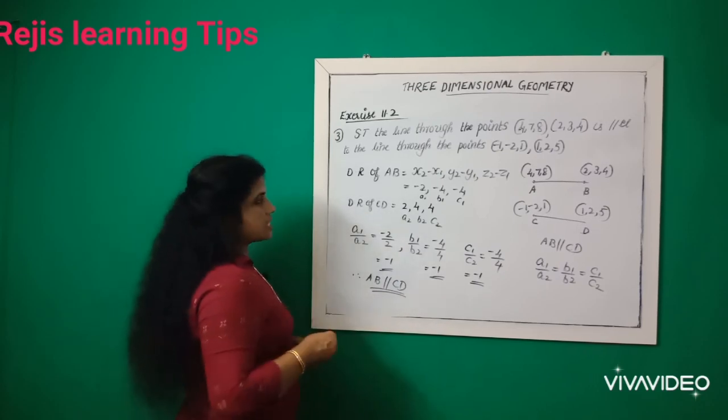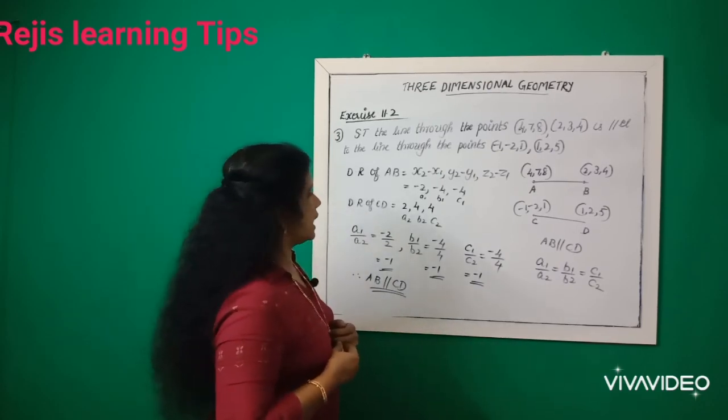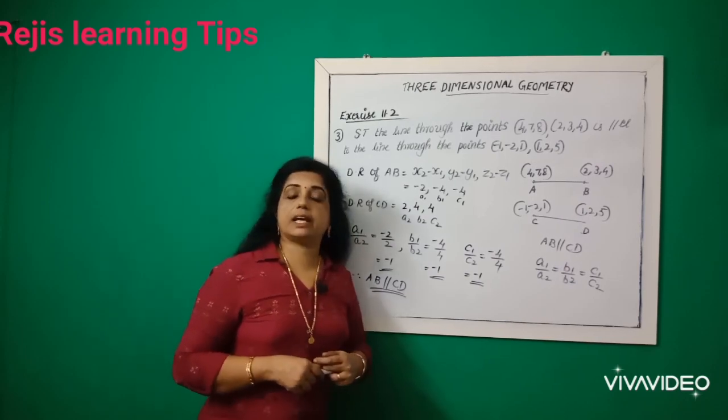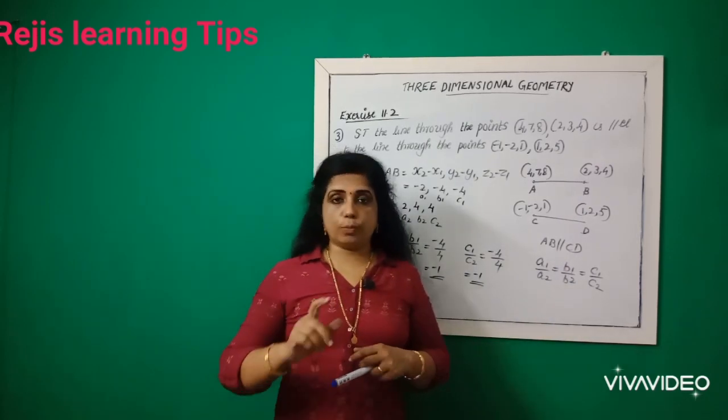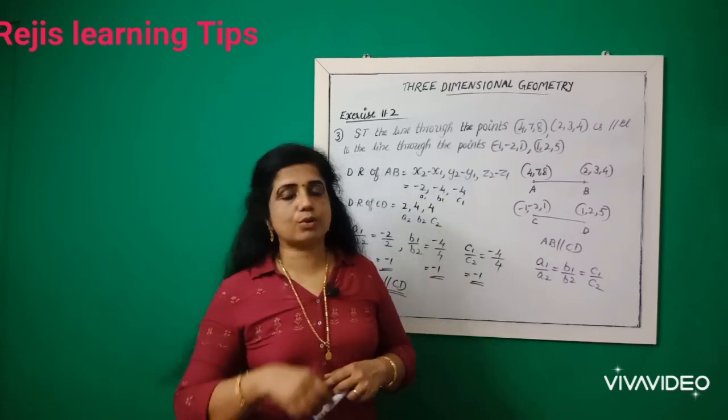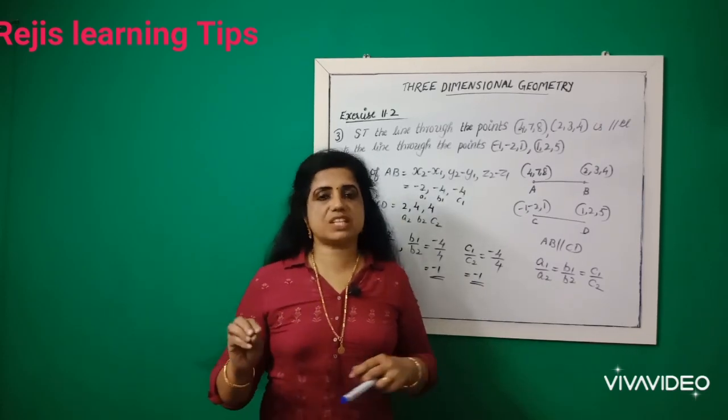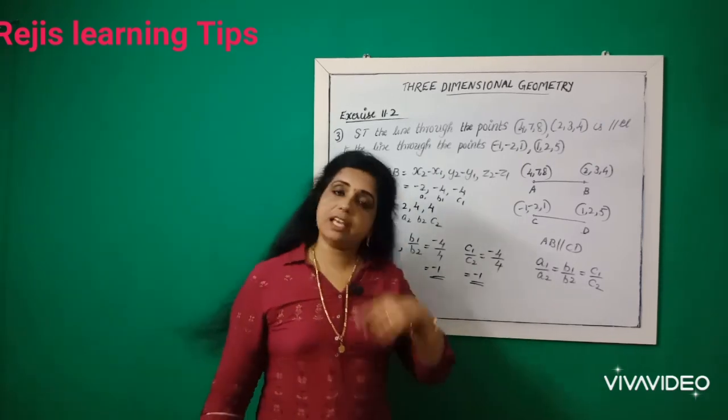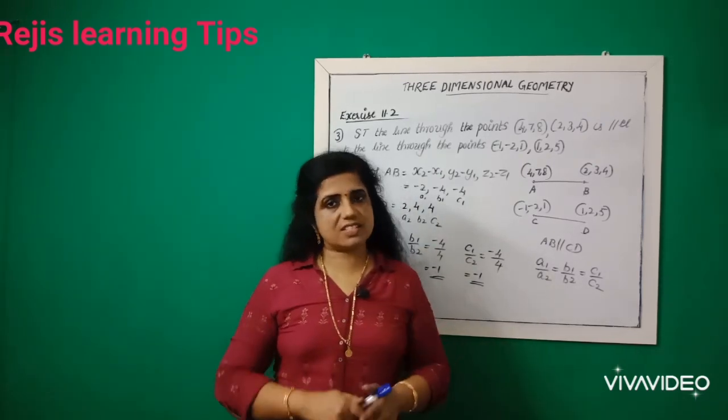Am I correct? The directional ratios prove that AB and CD are parallel, and we needed to prove that a1/a2 = b1/b2 = c1/c2. Understood? Okay students, study the third question clearly. The fourth question we will see in the next class. Until then, bye bye.